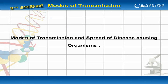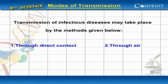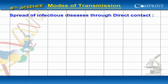Modes of transmission and spread of disease-causing organisms: transmission of infectious diseases may take place by the following methods — through direct contact, through air, through water and food, and through animals.